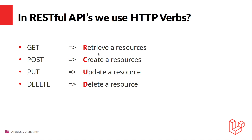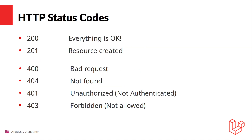Now let's move on to HTTP status codes — I'm only covering the ones we're going to use. A 200 means everything is OK. A 201 means a resource was created. A 400 is a bad request. A 404 means not found — the resource wasn't found. A 401 means unauthorized — the server doesn't know who you are. And a 403 means you're logged in but you're not allowed to view that particular resource.